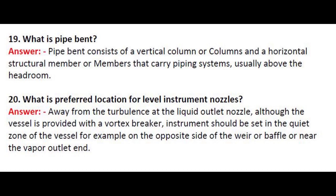Question 19: What is a pipe bent? Answer: A pipe bent consists of a vertical column or columns and a horizontal structural member or members that carry piping systems usually above the headroom.